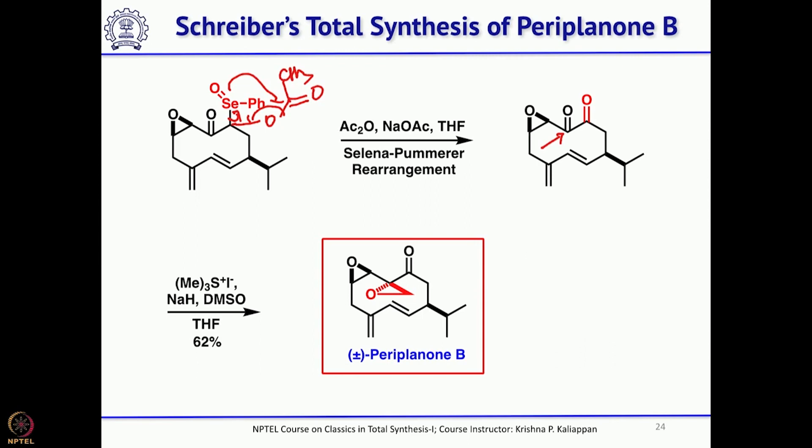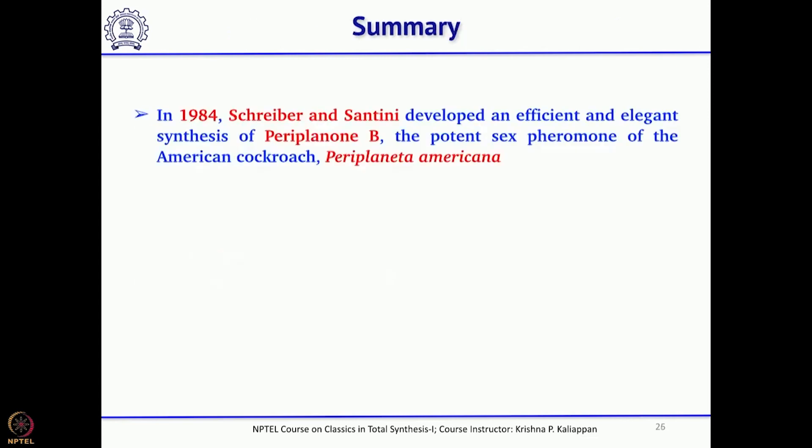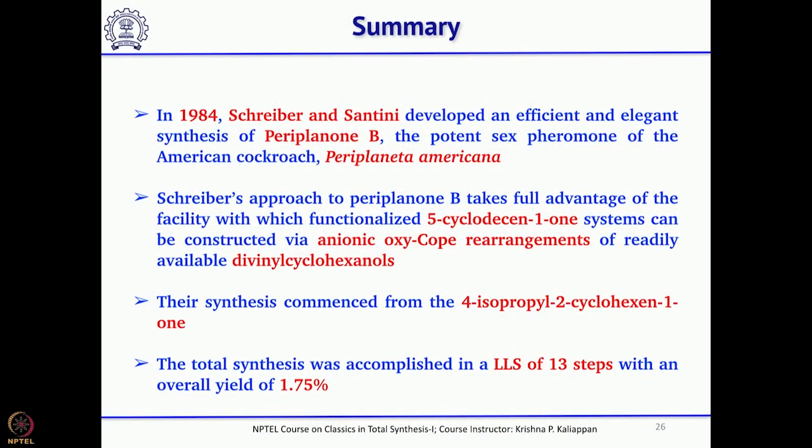This is one of the shortest syntheses of Periplanone B, involving anionic oxy-Cope rearrangement, 2+2 cycloaddition as a precursor, electrocyclic ring opening of cyclobutene, selenopummerer rearrangement to introduce the diketone, and a highly stereo- and regioselective epoxidation using trimethylsulfonium ylide. Overall it took about 13 steps with a yield close to 2%. With this, we will stop here and discuss more natural products next week.